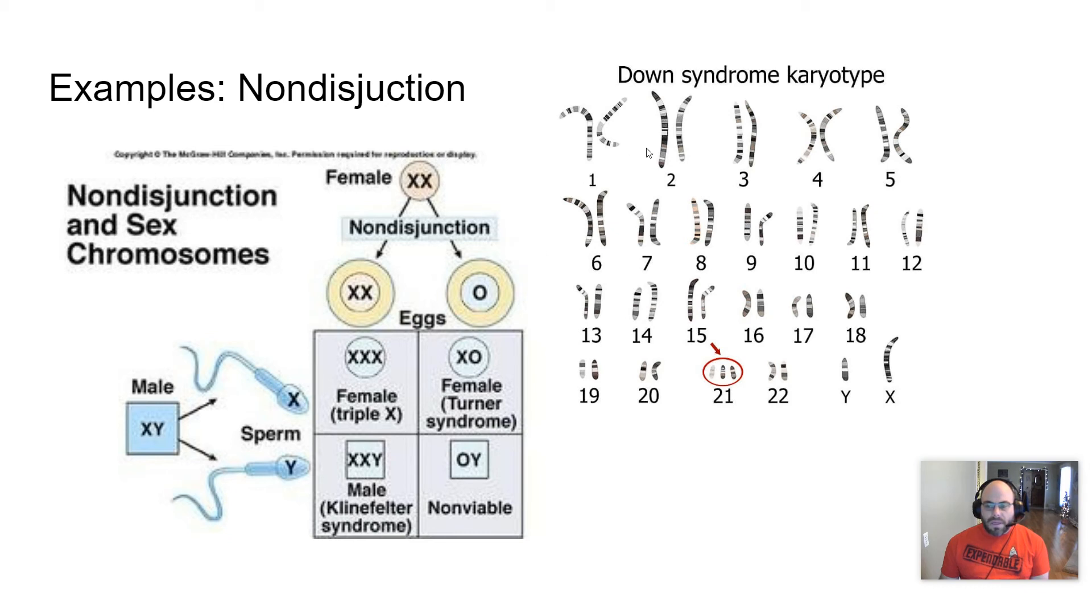Another example of this that is more common is called trisomy 21. Three chromosomes, 21st pair. We typically call this Down syndrome. And so this is an example of a nondisjunction on the 21st chromosome.